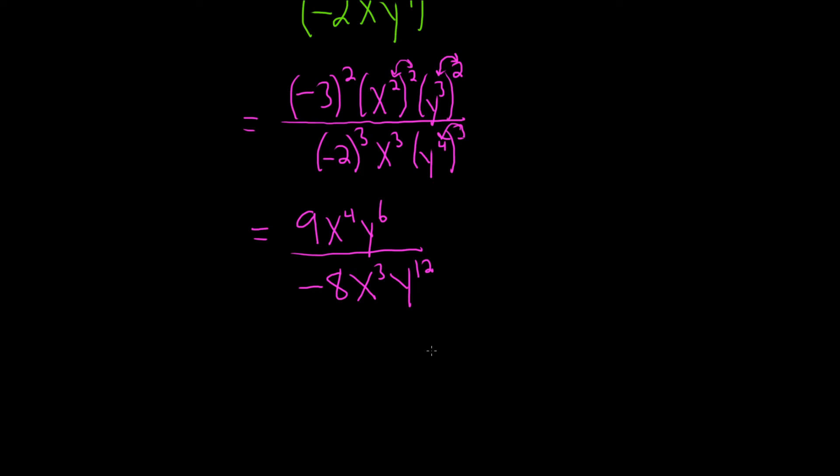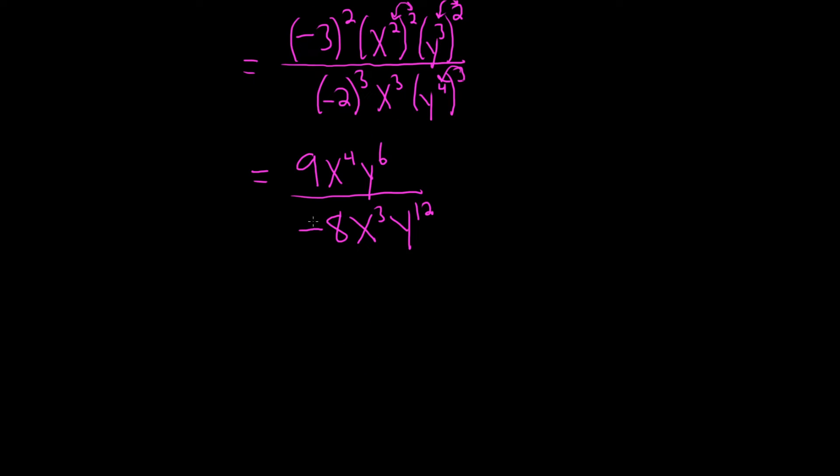All right, so this negative here, we can put it out front or you can put it up top. Let's put it out front. So negative 9 eighths, that's this piece here, and then watch this. These here, x to the 4 over x cubed, you subtract. So 4 minus 3 is 1, so you get x to the 1.